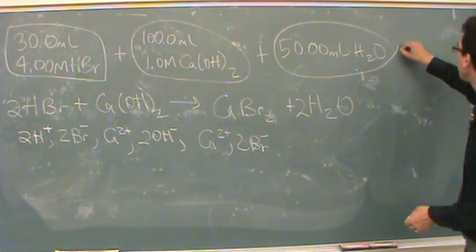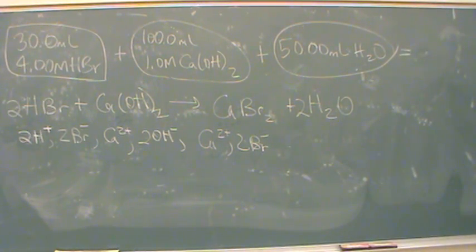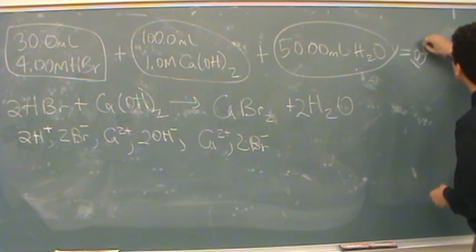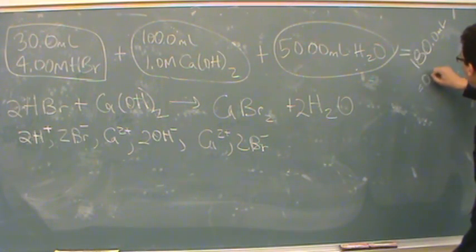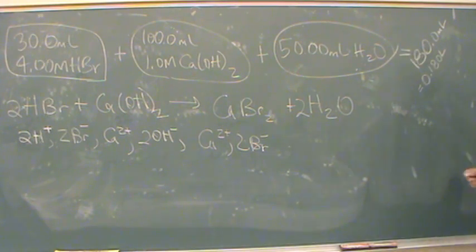Let's find out what's the total volume if you mix these three. Is it 180? Yeah, 180 milliliters. So I have the total volume. Now all I need to know is the moles of calcium and the moles of bromine in solution, and I divide it by the volume, which is 0.180 liters.